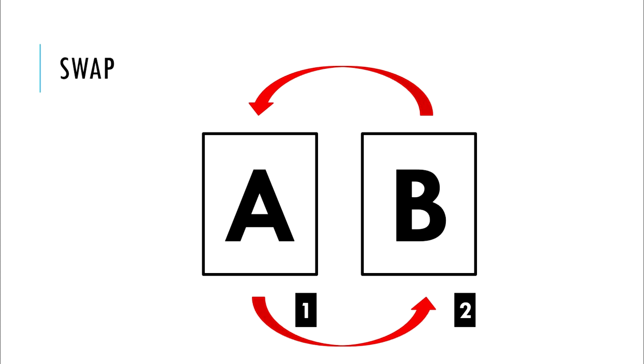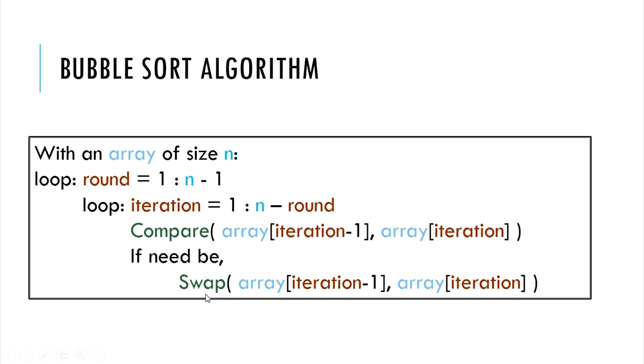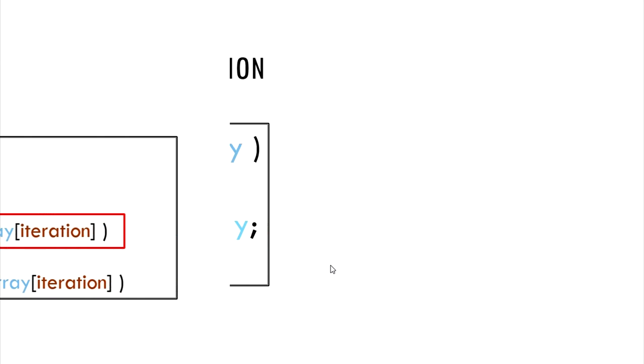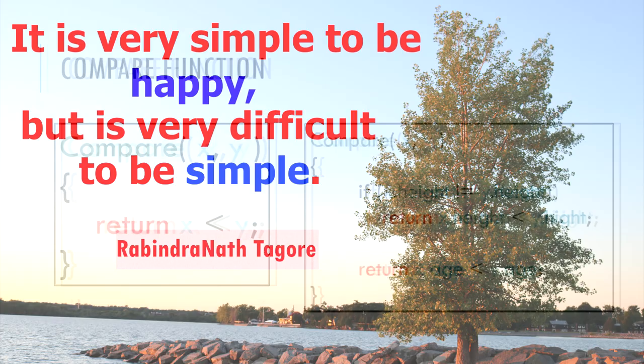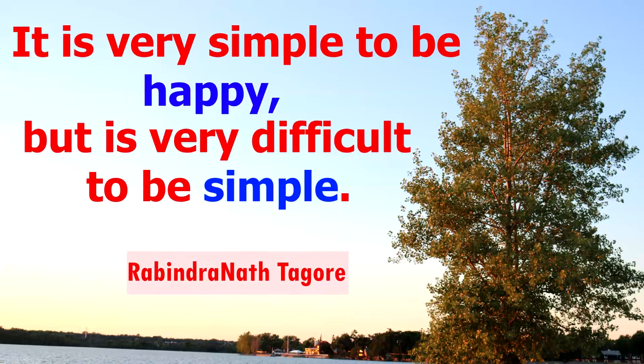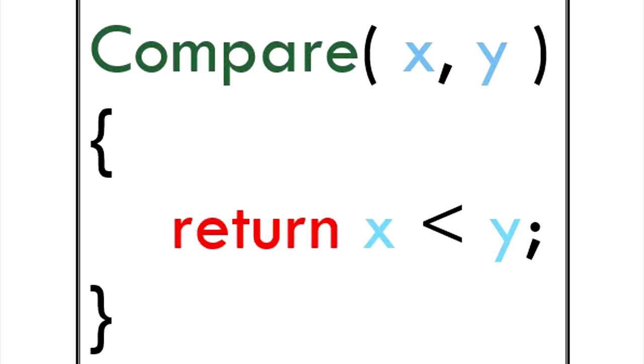We have kept our algorithm very general here. Notice how we have not specified any implementation for the compare function. The compare function can do a simple comparison of ascending or descending magnitude or it could do a more advanced compare with multiple sorting criteria like we have understood from my previous introduction to sorting video. For a simple example that is going to follow, we are sorting elements in an ascending order. Therefore, the compare function is just comparing the magnitude of the elements.